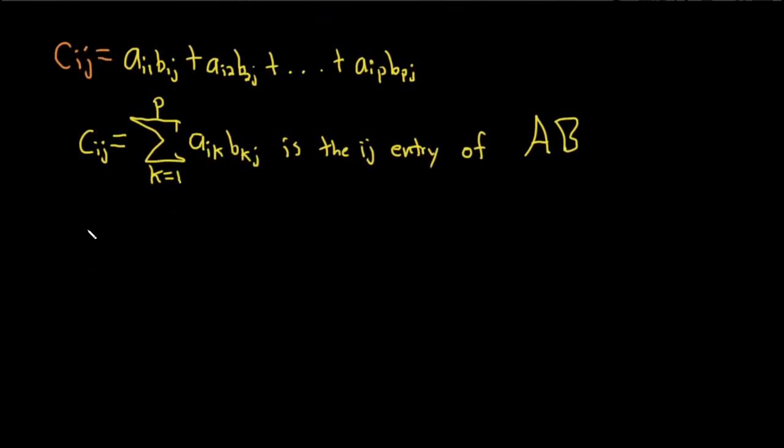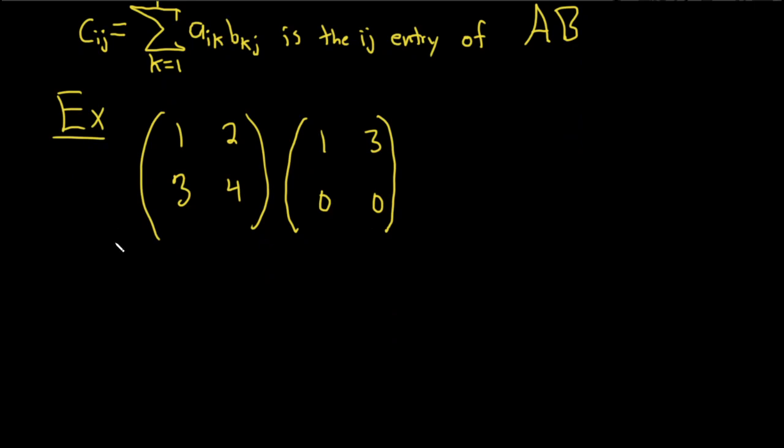So let's do just a really simple example of some matrix multiplication, just an easy one, just to make the point. So 1, 2, 3, 4. And let's just do two 2×2 matrices, 1, 3, 0, 0, just to make it easy. So these are both 2×2 matrices. So over here, this one is 2×2. That's two rows, two columns. Same thing here, two rows, two columns.